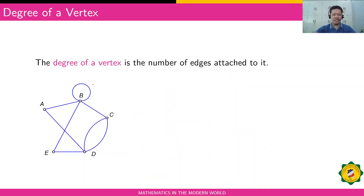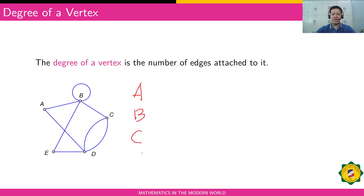How about the degree of a vertex — how do we determine it? The degree of a vertex is the number of edges attached to it. We have five vertices here, and let's determine their degrees by counting the number of edges connected to them. For vertex A, you can see two edges, so the degree of vertex A is two.